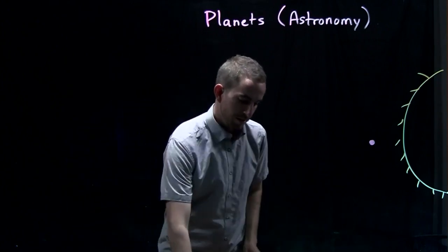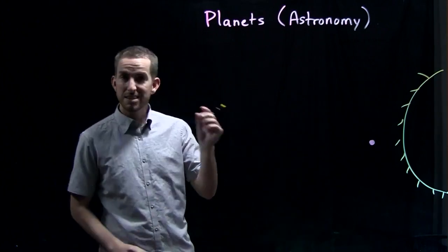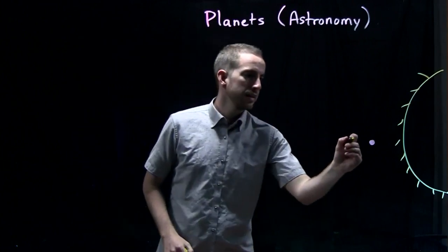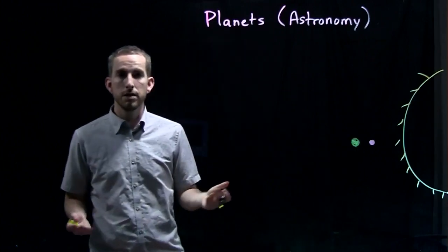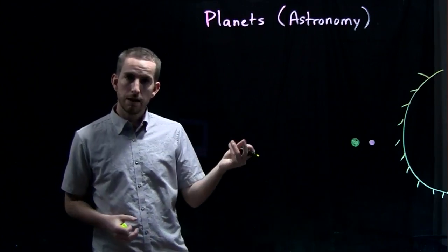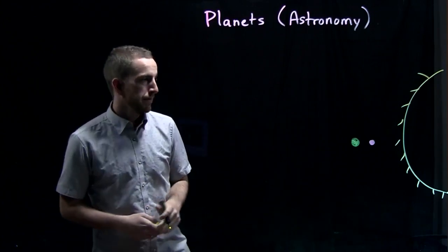The next planet is Venus. Venus is a little bit bigger than Mercury. It's not that big. And in Korean it's called 금성. And it's orange, yellow, color like gold.